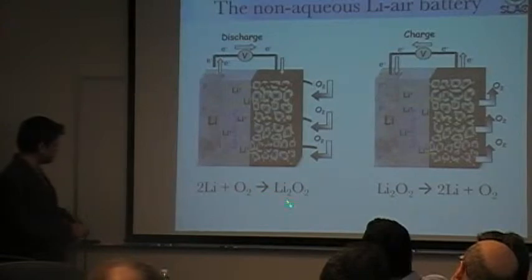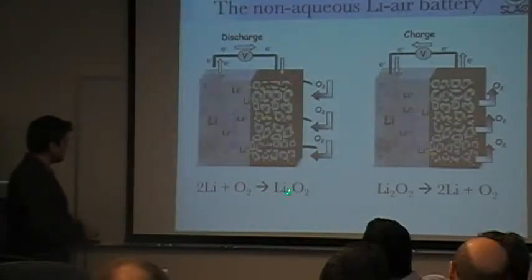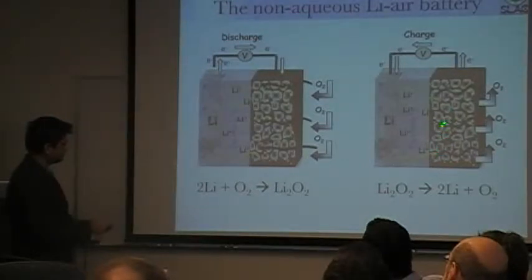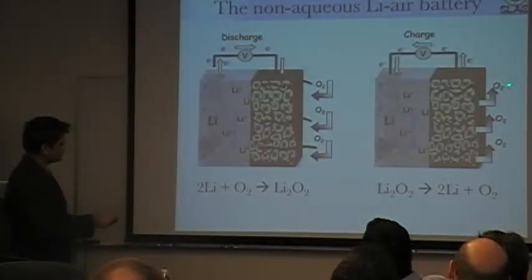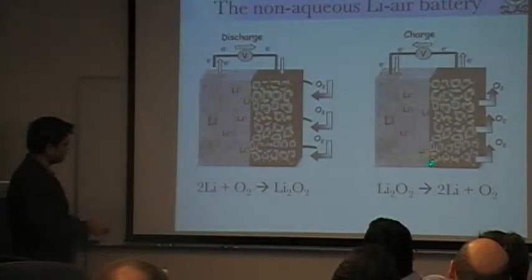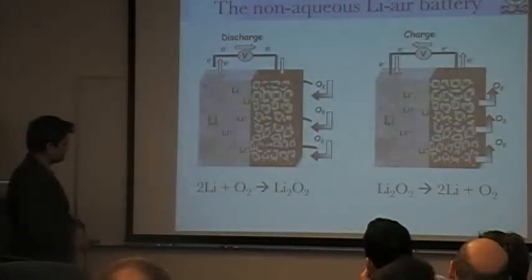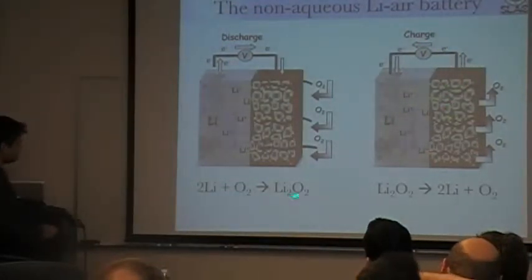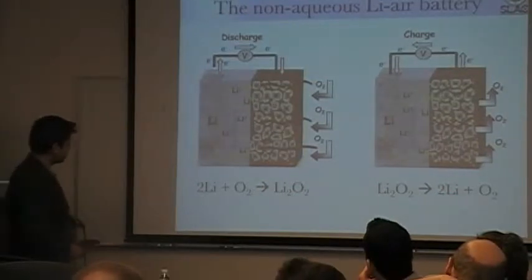It is important that this product is lithium peroxide. When you charge it back, lithium peroxide essentially decomposes: you form Li+ and oxygen evolves out, electrons go back, and then combine with lithium. So this forms the discharge cycle and the charging cycle.